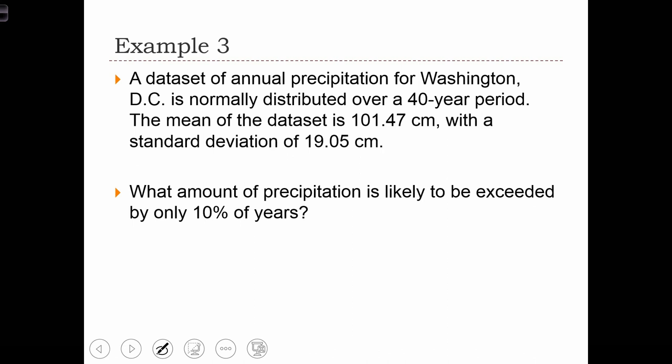Here's one more example for you. A dataset of precipitation is normally distributed with a mean of 101.47 centimeters and a standard deviation of 19.05 centimeters. What amount of precipitation is likely to be exceeded by only 10% of years?